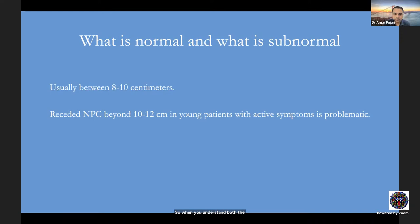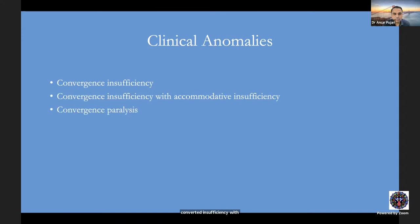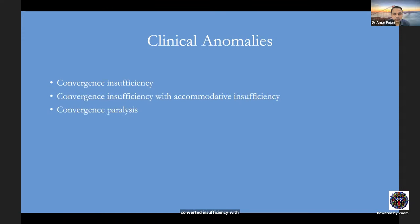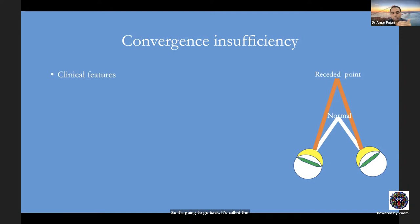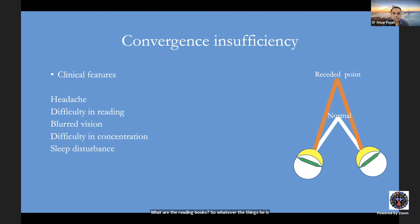The clinical anomalies of convergence are: (1) convergence insufficiency, (2) convergence insufficiency with accommodative insufficiency, (3) convergence paralysis, and (4) convergence spasm. In convergence insufficiency, the near point recedes beyond 12–15 cm. Since the patient cannot converge properly, they experience blurred or double vision, difficulty reading, mobile screen use, and books. This leads to excessive convergence effort, resulting in constricting headaches, loss of concentration, and sleep disturbances.